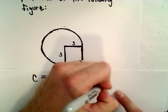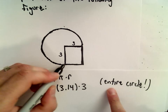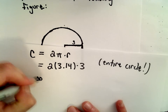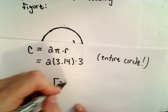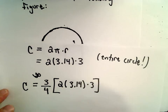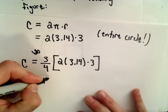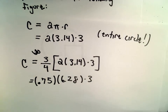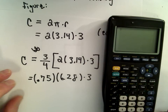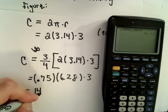But again, this would be correct for an entire circle, and we don't have an entire circle — we've only got three-fourths of a circle. So our circumference is going to be three-fourths of this quantity: 2 multiplied by 3.14 multiplied by 3. I have to multiply 2 pi times r by three-fourths. Three-fourths is 0.75, and 2 multiplied by 3.14 is 6.28. So: 0.75 multiplied by 6.28 multiplied by 3. I'm getting that to be 14.13.